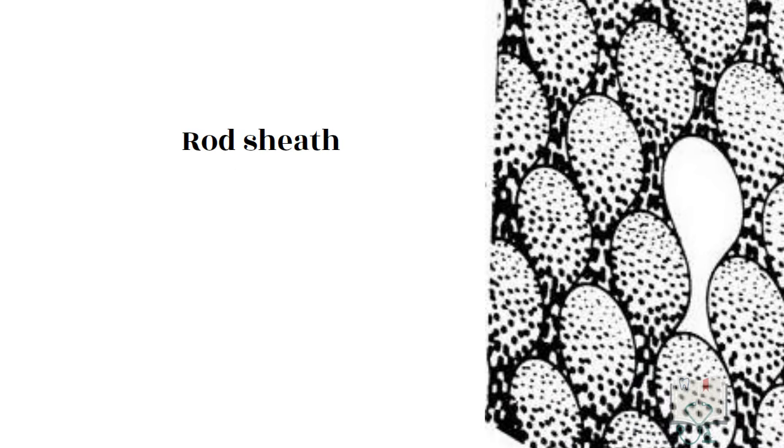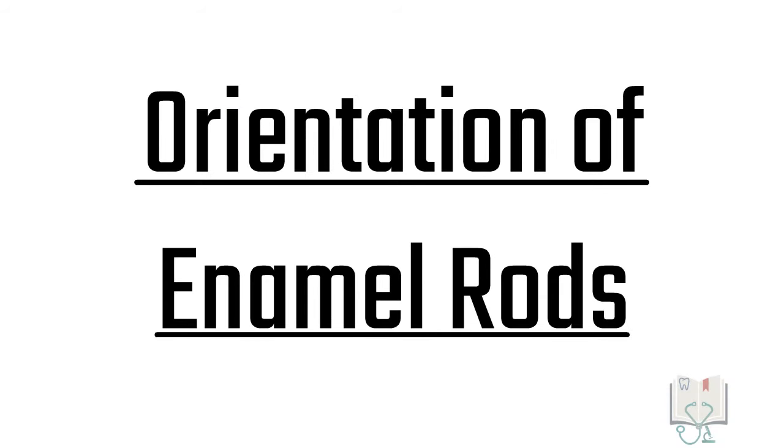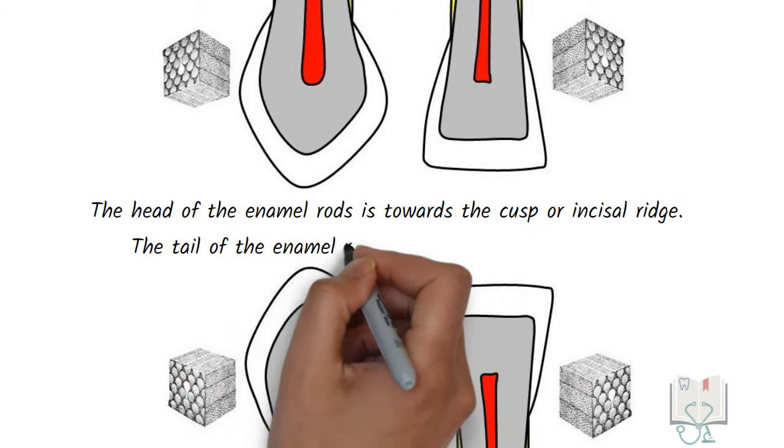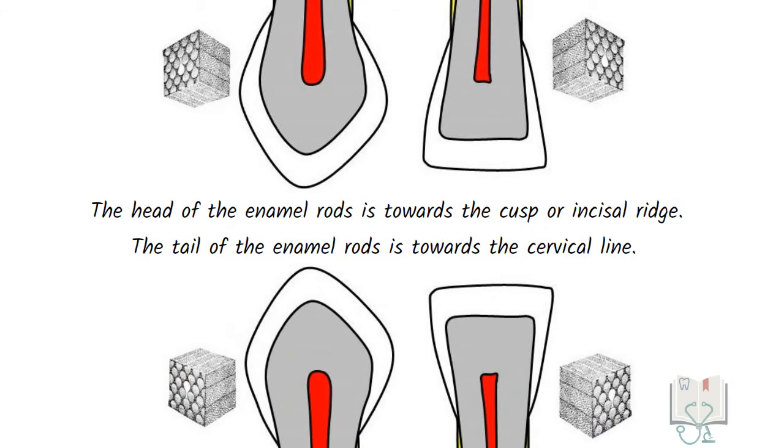As mentioned, the rod sheath is the layer of organic matrix separating enamel rods from one another. In the enamel, if we see the orientation of rods, the head is always towards the cusp and the tail part is always towards the cervical line.